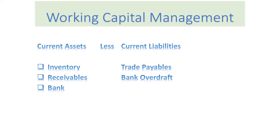You can determine that inventory and receivables will require funding. As an example, if you have higher inventory, you will need to pay for warehouse space, insurance, manpower, and so on. You also need funding to finance your receivables. So basically, current assets require funding. When it comes to current liabilities, in the form of trade payables, they are a source of funding.